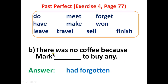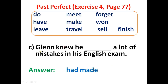Number B: 'There was no coffee because Mark had forgotten to buy any.' 'Forgotten' is the past participle of 'forget'. Number C: 'Glenn knew he had made a lot of mistakes in his English exam.'